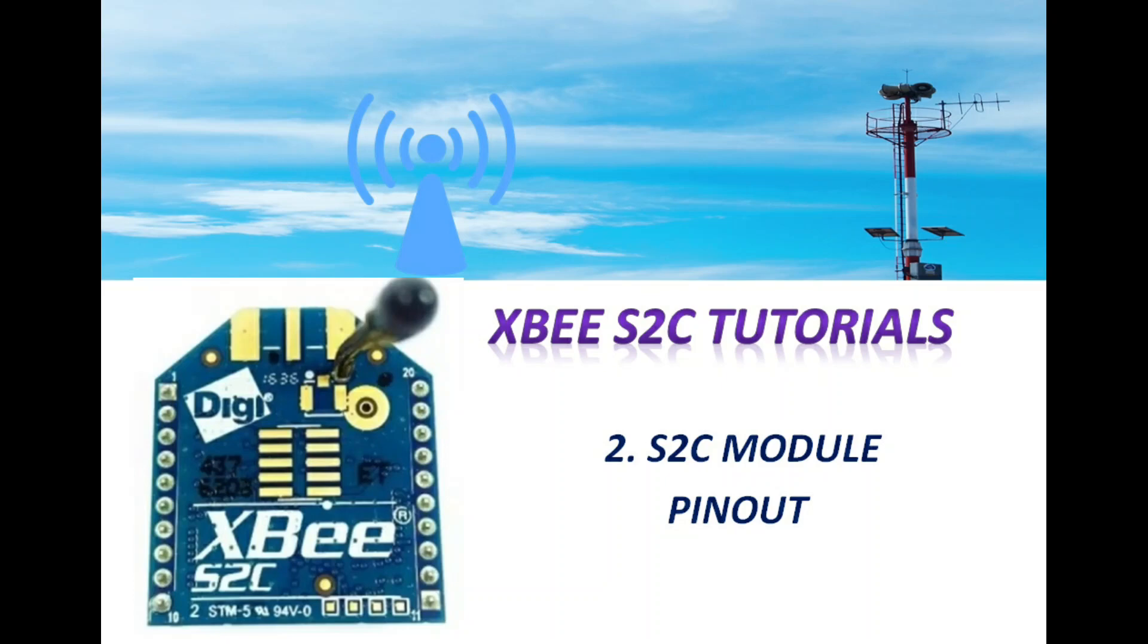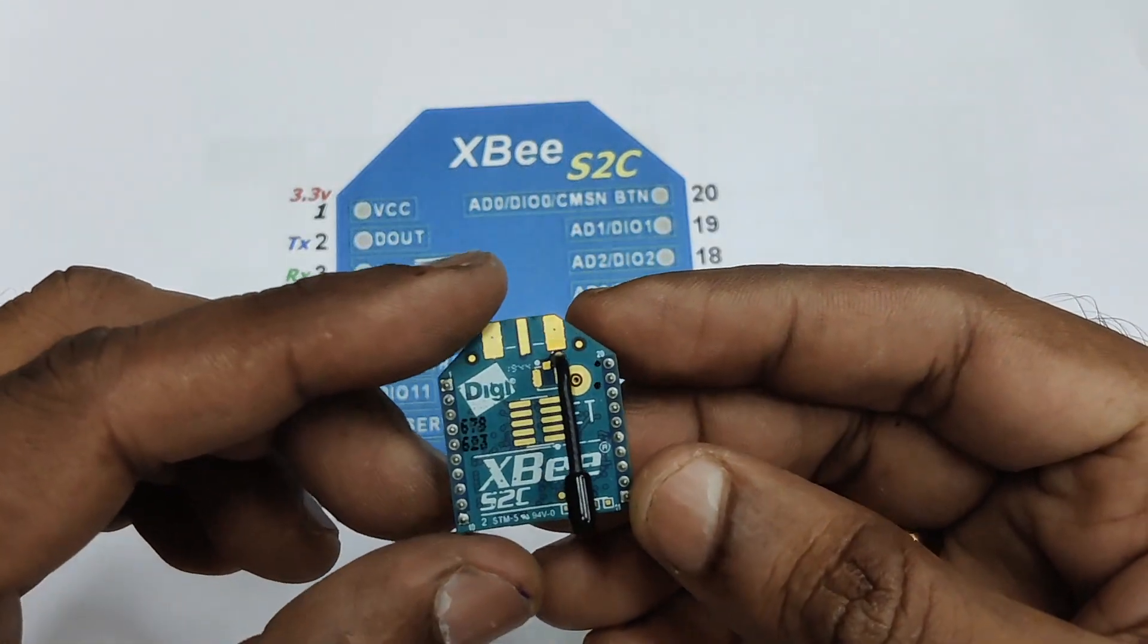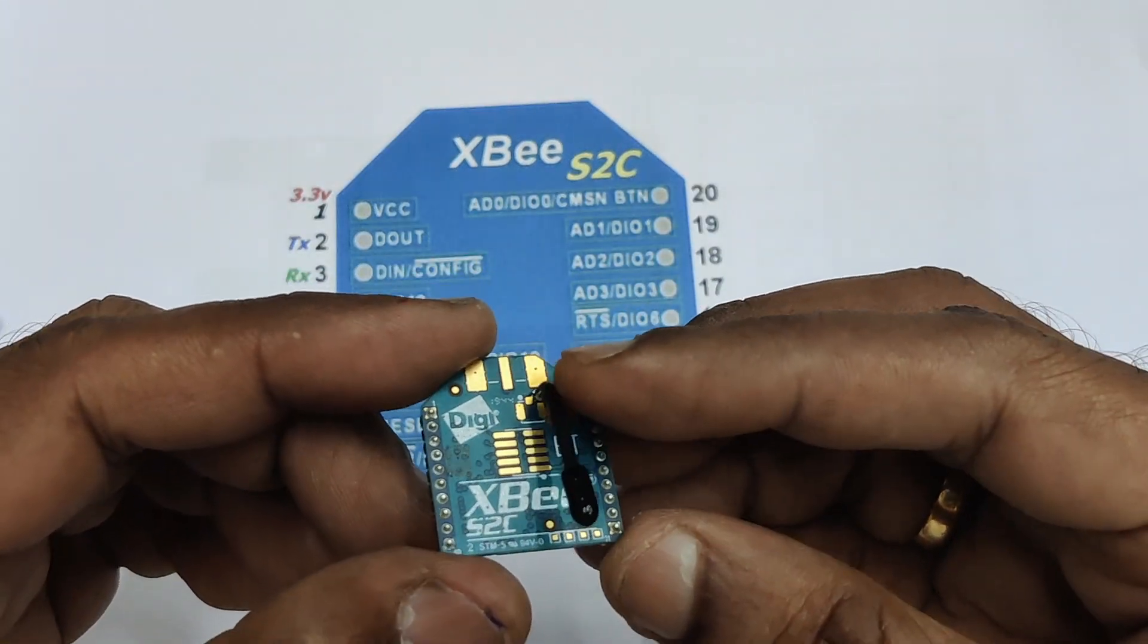Hello all, welcome back. In this second video we will see the S2C module's pinout. S2C has got total 20 pins of spacing 2mm and it has got a pigtail antenna on top.